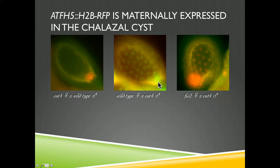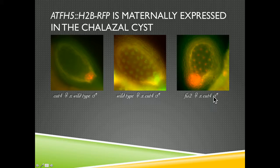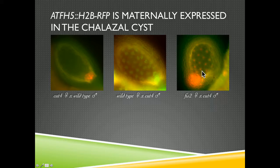Again, this is regulated by the histone methyltransferase polycomb, because if that mother is polycomb defective - which I've done here with the FIS2 mutation - and now the father is carrying that reporter, not only do I get bright expression in the posterior pole, but we've lost that domain specificity. Now we get, in the polycomb mutant mother, expression of this gene throughout the endosperm.